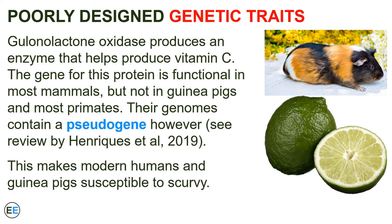An interesting example of a pseudogene is the gene that codes for galanolactone oxidase, which produces an enzyme that helps produce vitamin C. The gene for this protein is functional in most mammals, but not in guinea pigs and most primates. Their genomes do contain a pseudogene, however. Why would the genomes of these species contain genetic sequence that is almost — but not quite the same as — the functional gene in their relatives? It doesn't make any sense from a pure design point of view to have an extra, almost-functional gene. But it does make sense in a scenario in which their ancestor lost the functional gene due to a mutation, and the modern species inherited this remnant from that ancestor.